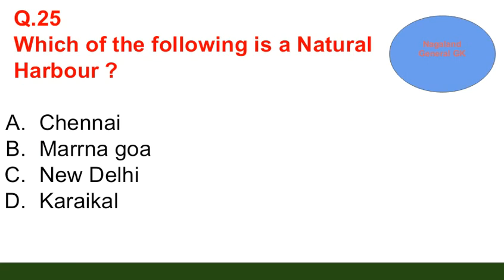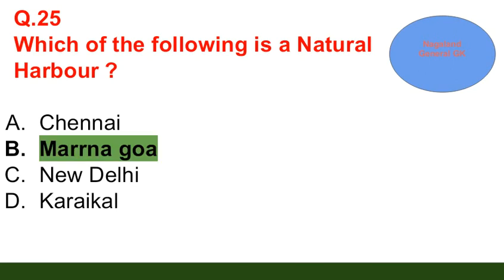Question number 25: Which of the following is a natural harbor? Option A: Chennai; option B: Marmagao; option C: New Delhi; option D: Karai. The correct answer is option B — Marmagao.